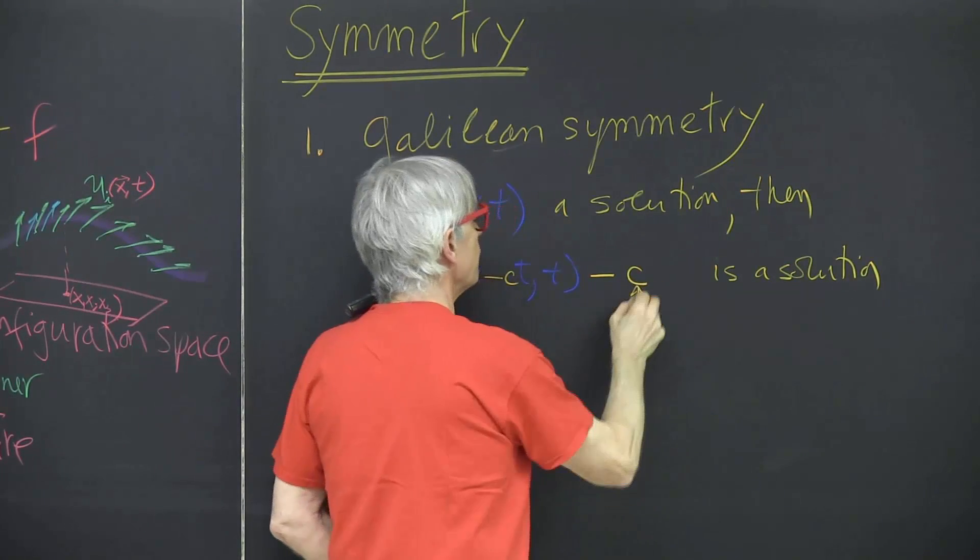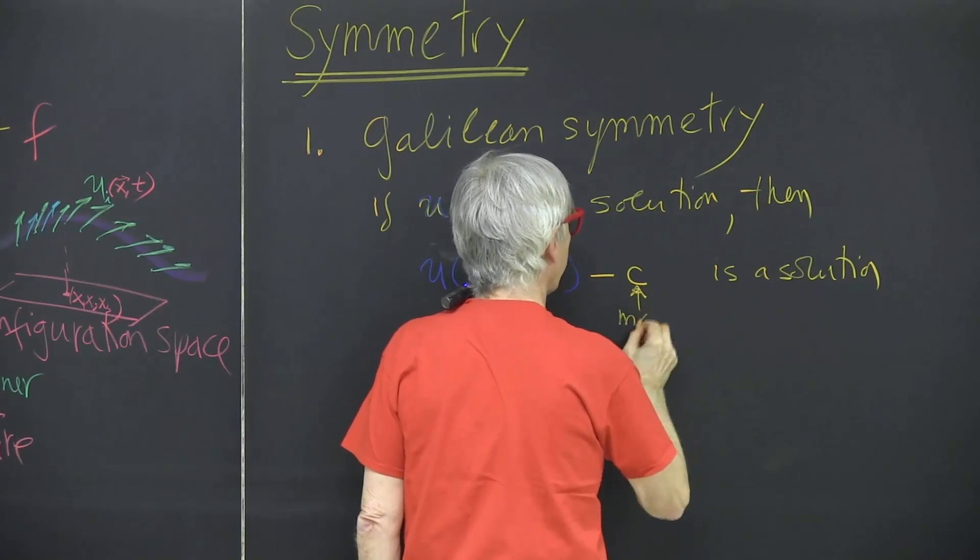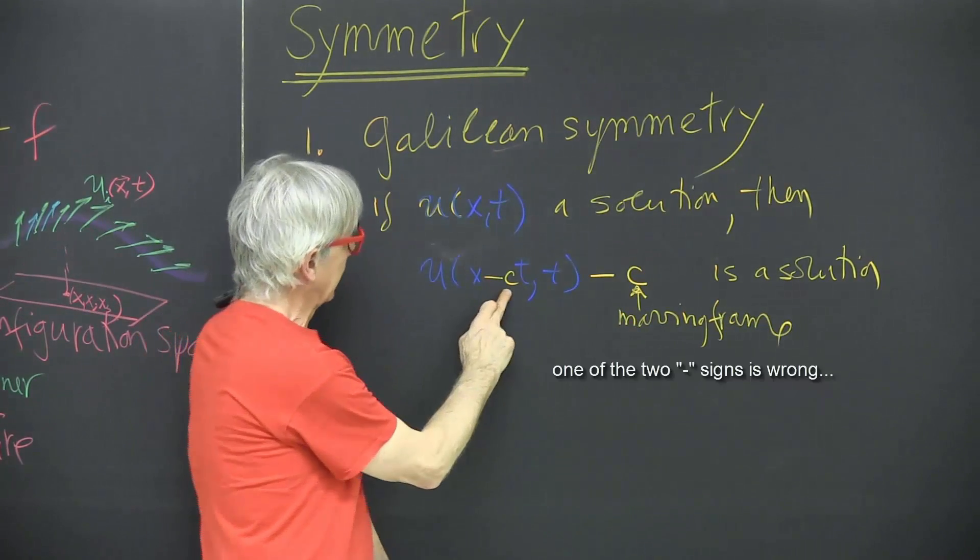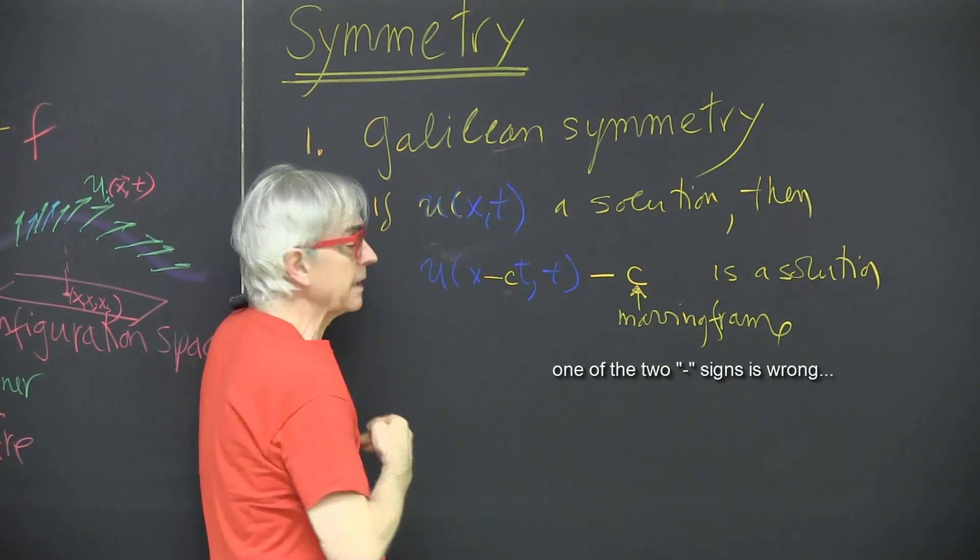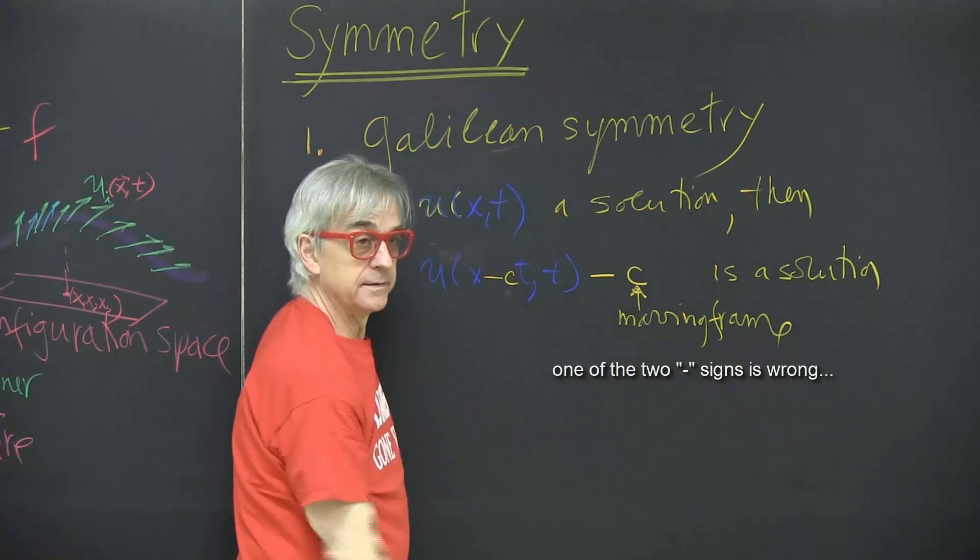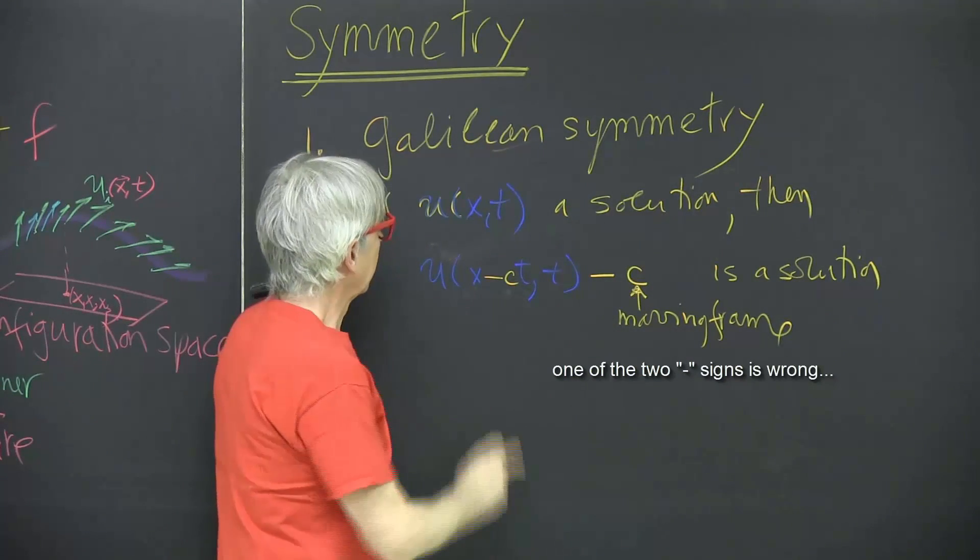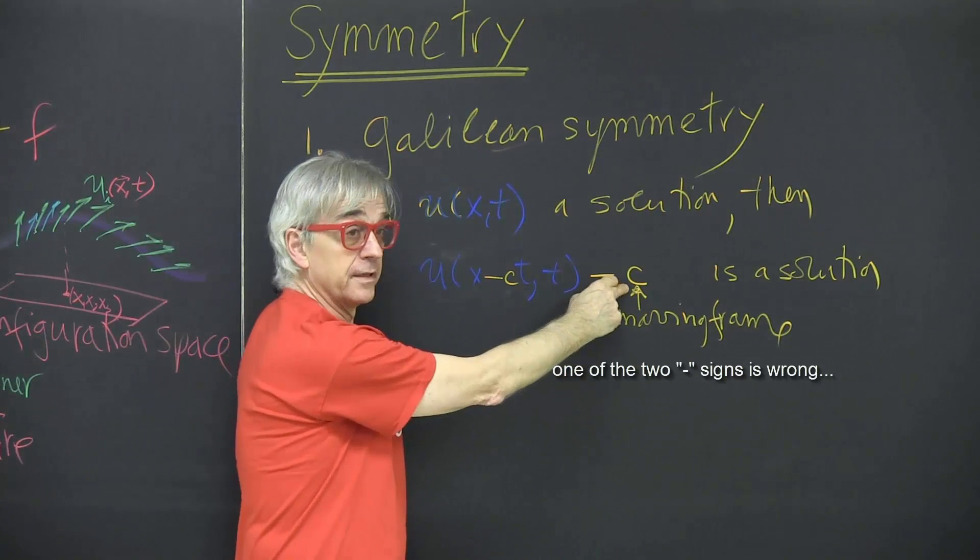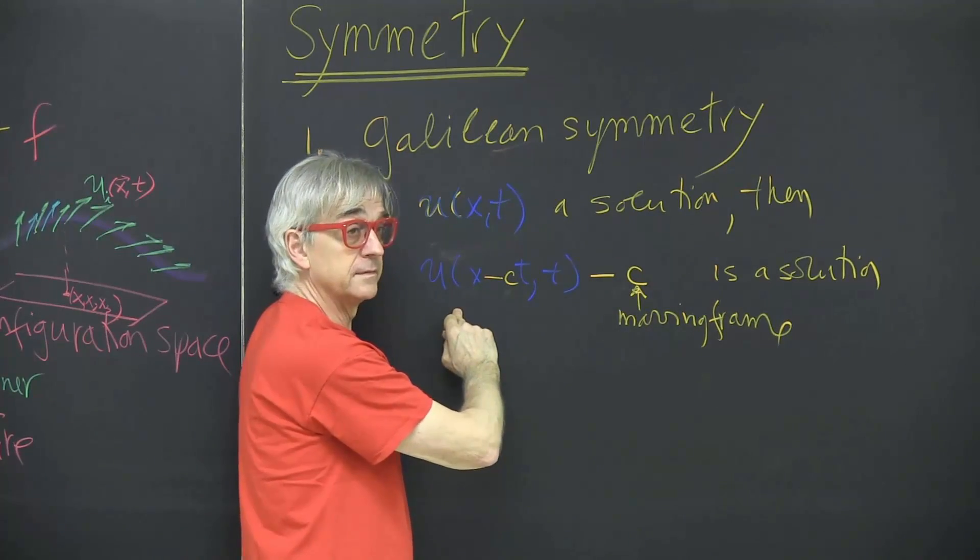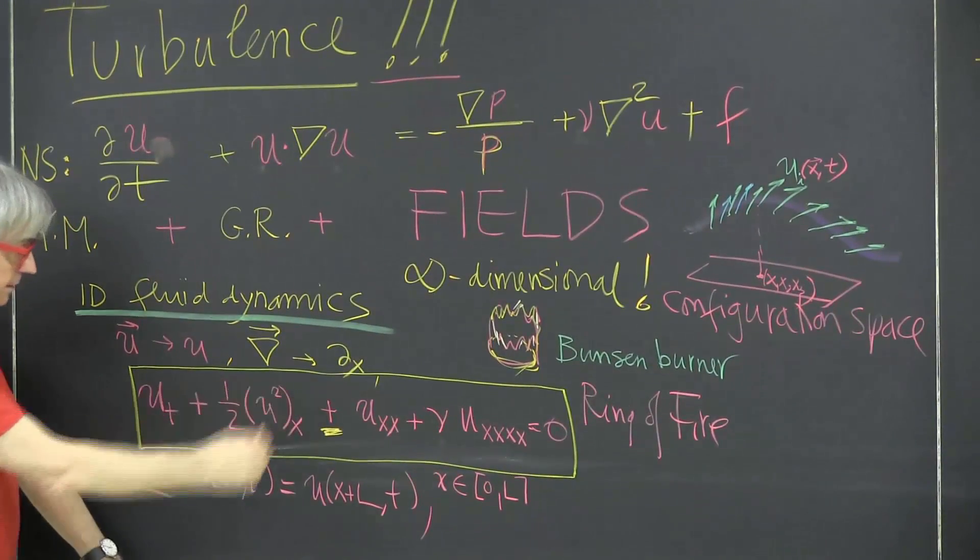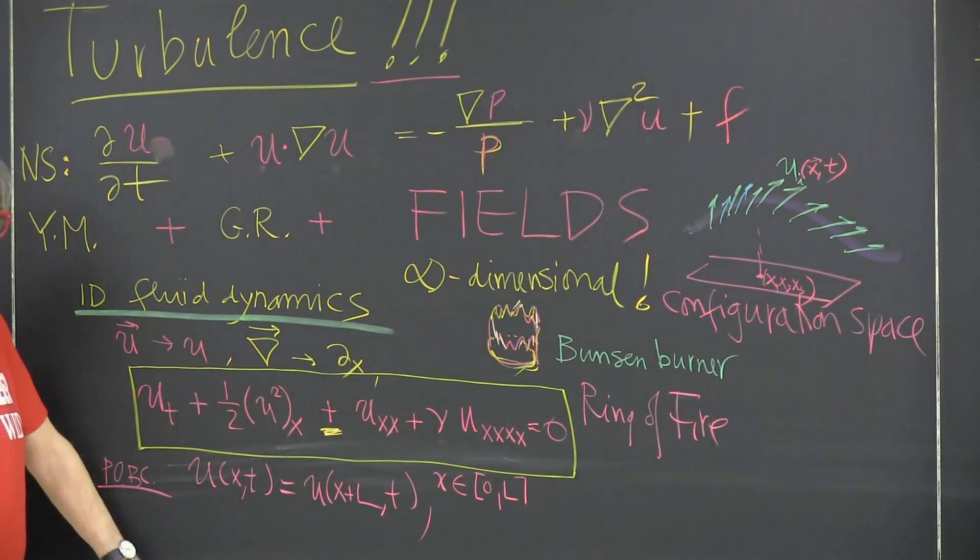So this is the velocity of a moving Galilean frame. If I subtract to where I am on a moving frame, that's what this does. And subtract the velocity from the field itself. And stick this in the equations. I will show that equations keep their own form.